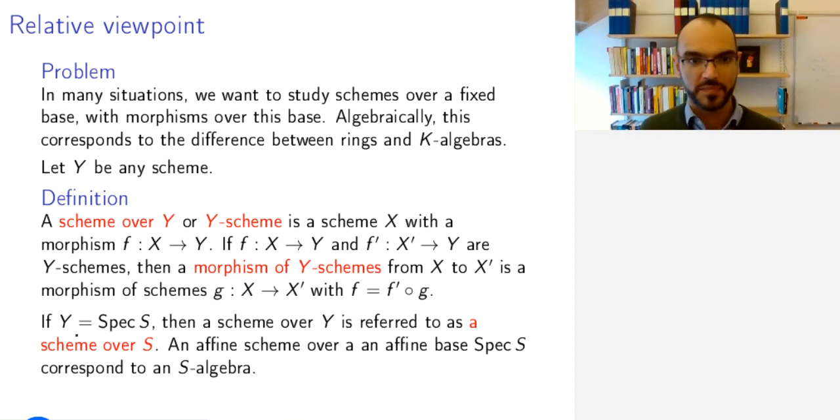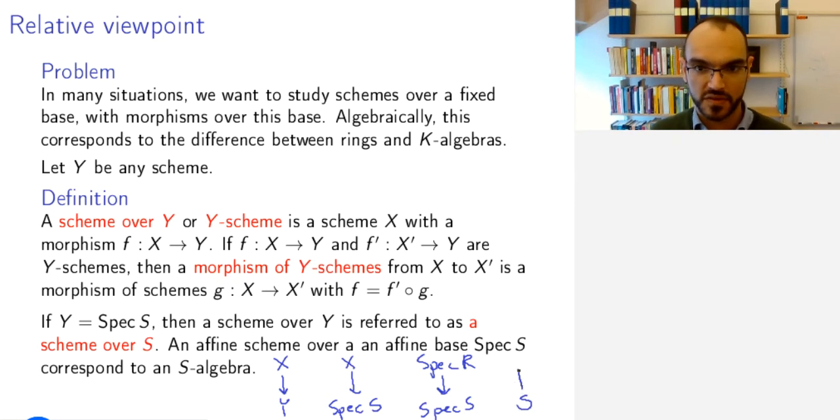Also, if our base scheme Y happens to be an affine scheme, then instead of saying that X is a scheme over Y, we'll say that X is a scheme over S, or an S scheme. And if the scheme X also is affine, then we're just dealing with an S-algebra. In the most general case, we have X mapping down to Y. Sometimes we have an affine base. Sometimes we have an affine scheme over an affine base. And by the contravariant equivalence, this corresponds to an algebra homomorphism from S to R, which is the same as an S-algebra structure on R.